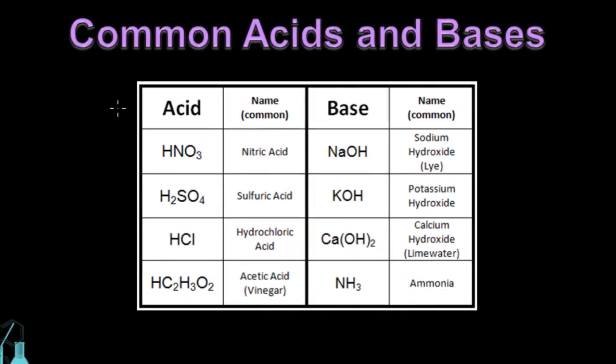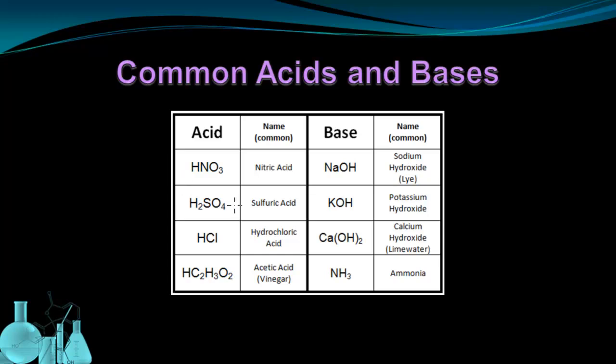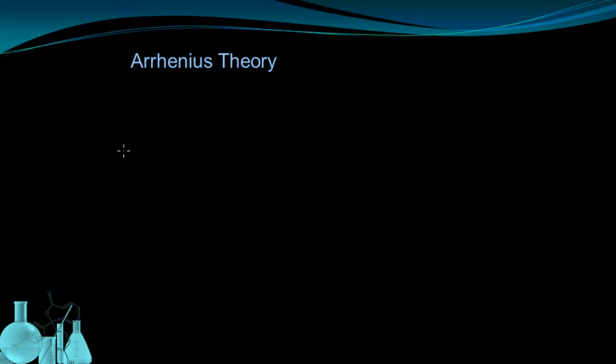So the next question we're going to ask ourselves is what makes something an acid or base? We know how to distinguish them now from their properties, but how do we know what actually makes something acid or what makes something a base? And the earliest explanation of what makes an acid and what makes a base was proposed by a Swedish chemist named Svante Arrhenius.